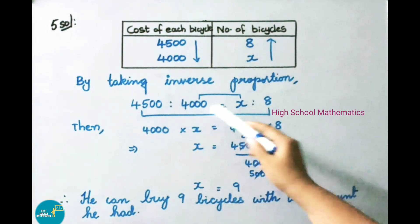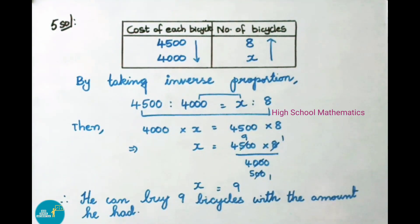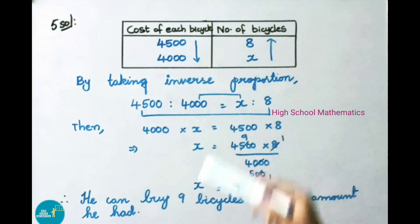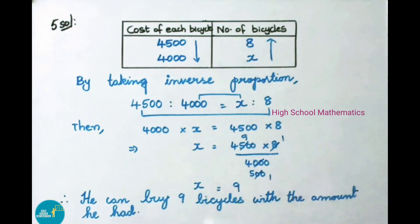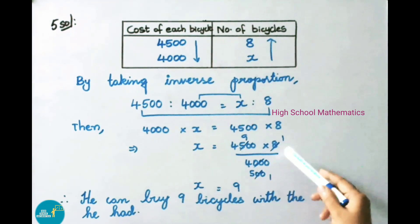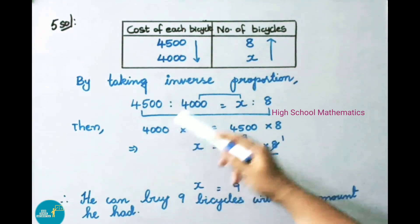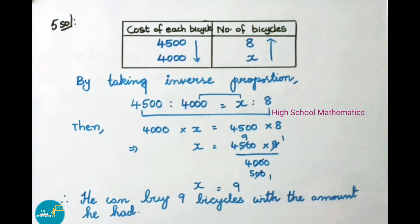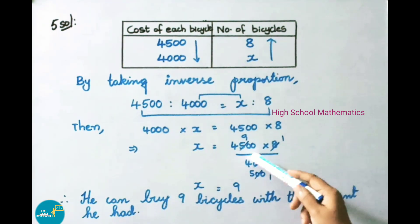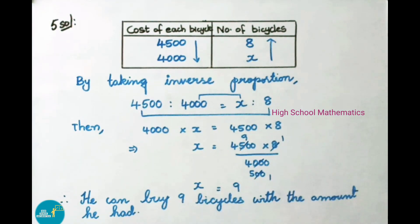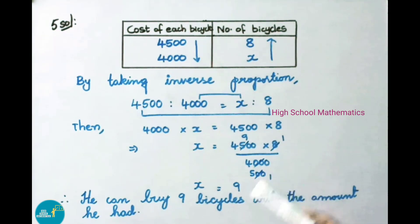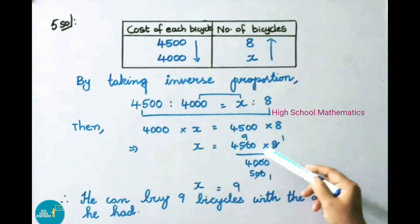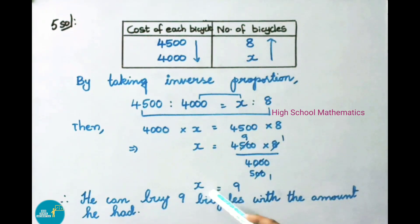By taking inverse proportion: 4,500 is to 4,000 is equal to X is to 8. We know product of means is equal to product of extremes. So, 4,000 into X is equal to 4,500 into 8. That implies X is equal to 4,500 into 8 by 4,000. Here 4,000 is going to multiply; on transposing it becomes divided by. So, X value is equal to 4,500 into 8 by 4,000, which gives X value as 9.